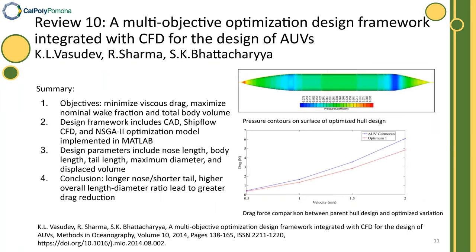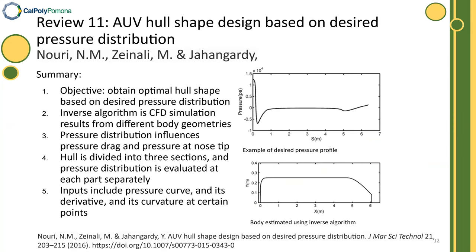The tenth study reached a similar conclusion: a longer nose and shorter tail combined with a higher total length-to-diameter ratio led to the best results in minimizing drag. The eleventh article discusses the development of a hull profile based on a desired pressure distribution curve, and as shown in the figures on the right, the results are not as accurate as those of a traditional algorithm.